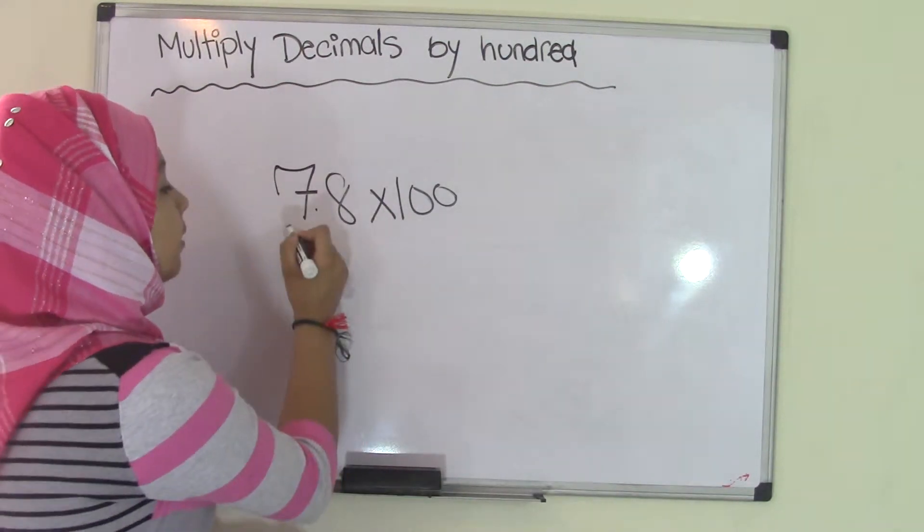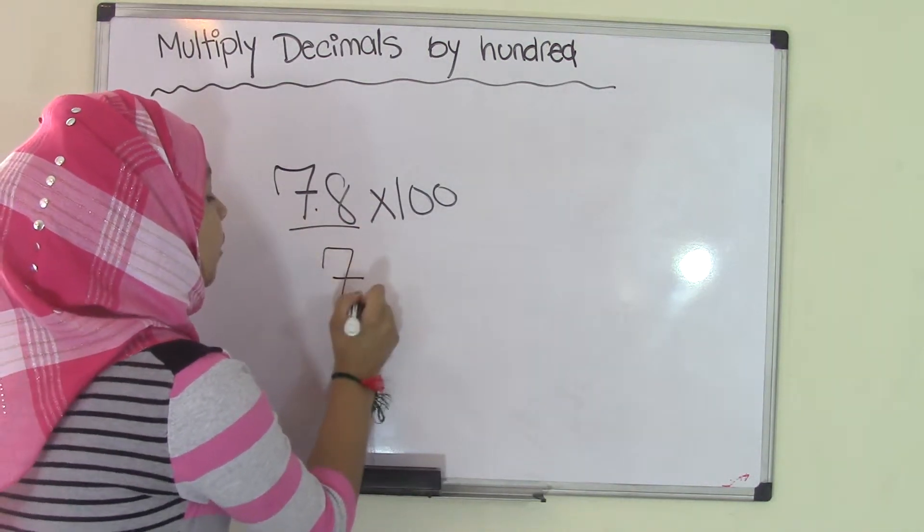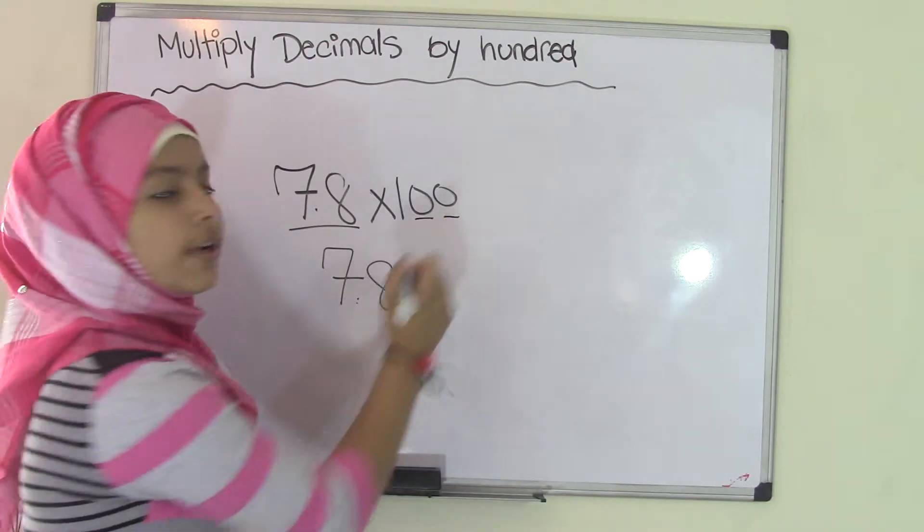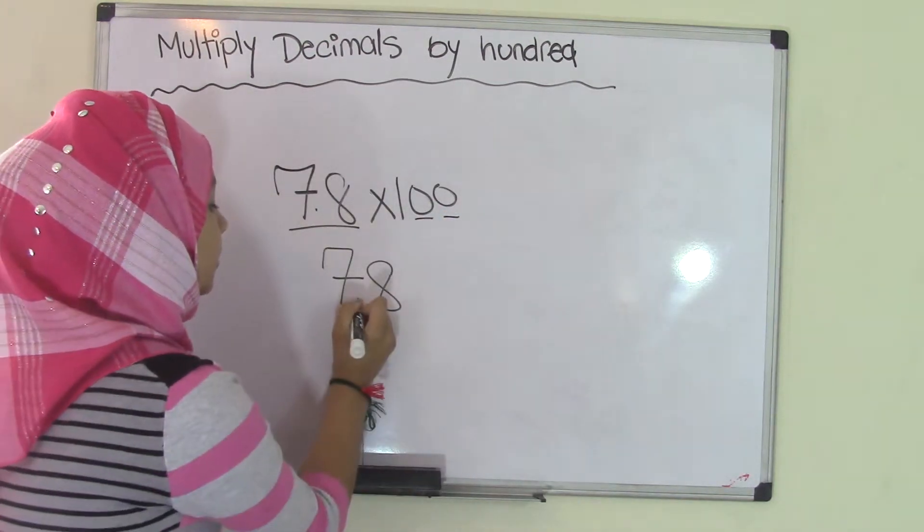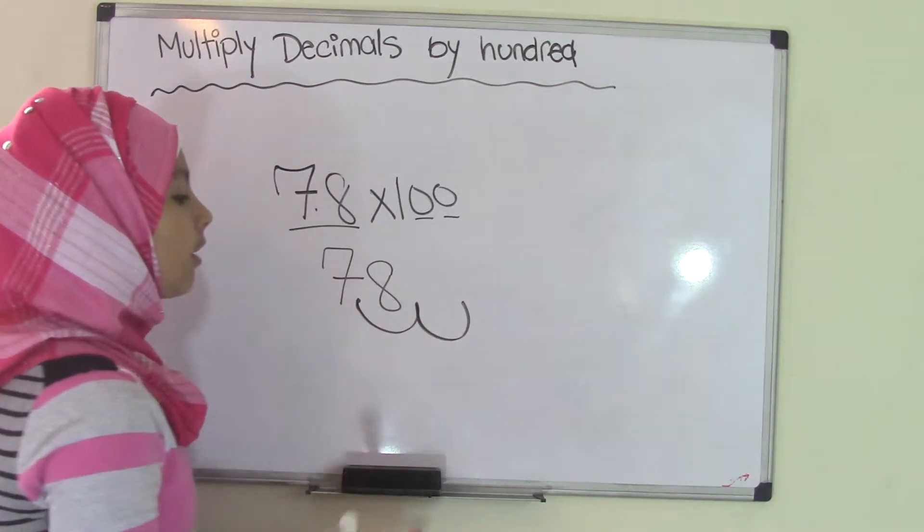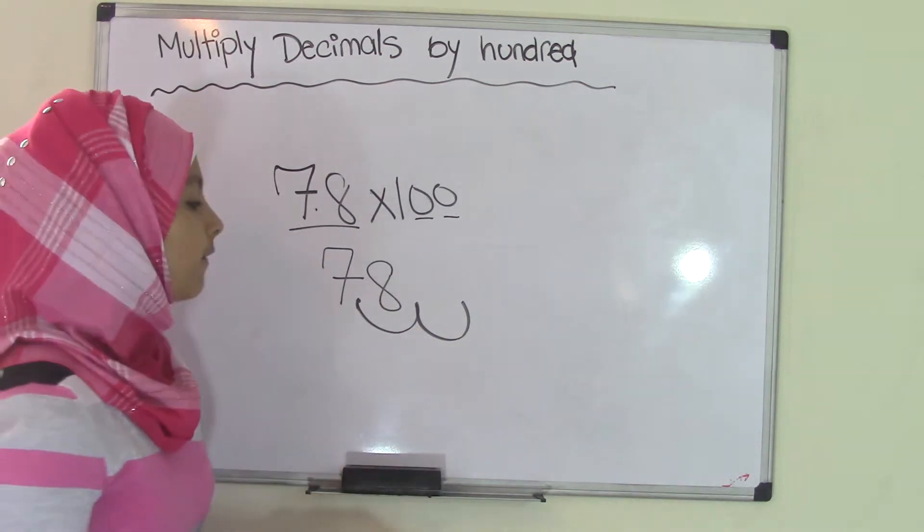So what we're going to do is look at our decimal number 7.8 and we are going to move the decimal point 2 times because 100 has 2 zeros. So we'll take the decimal point and we're going to move it 2 times: 1, 2. Now as you can see there's a gap here. What will we do with the gap? Well the only thing you have to do is add a zero.